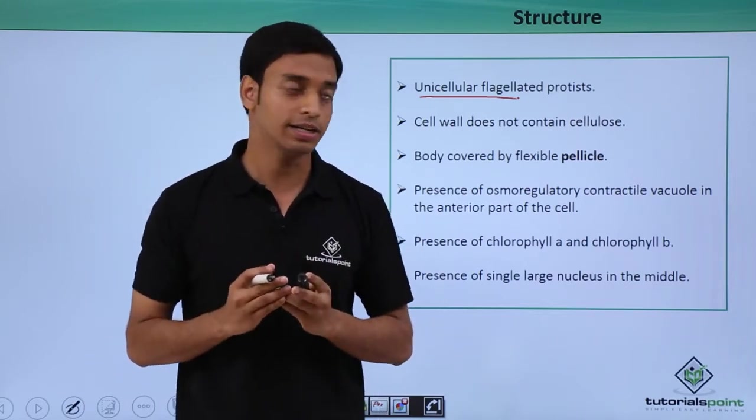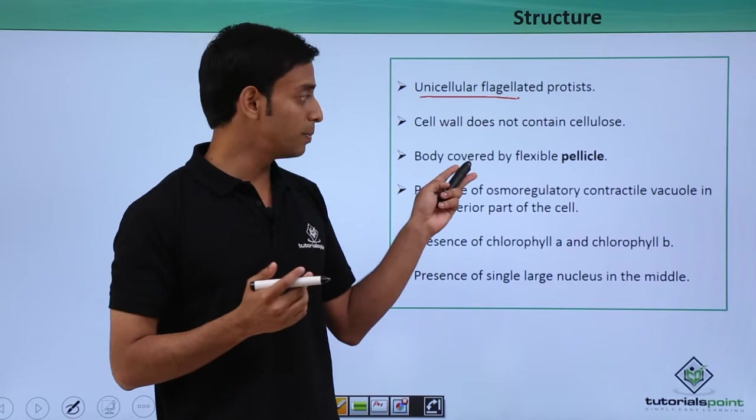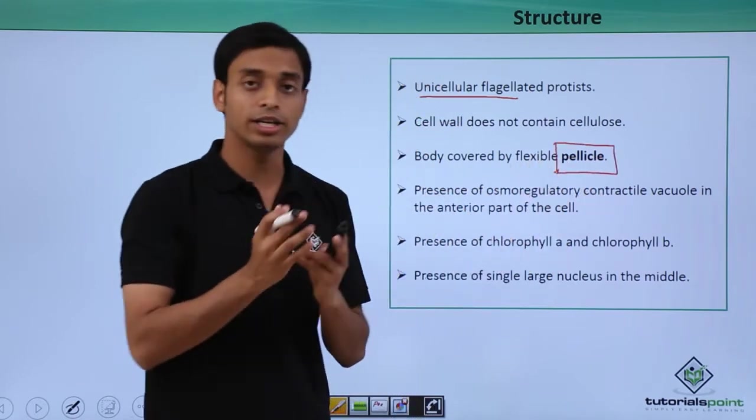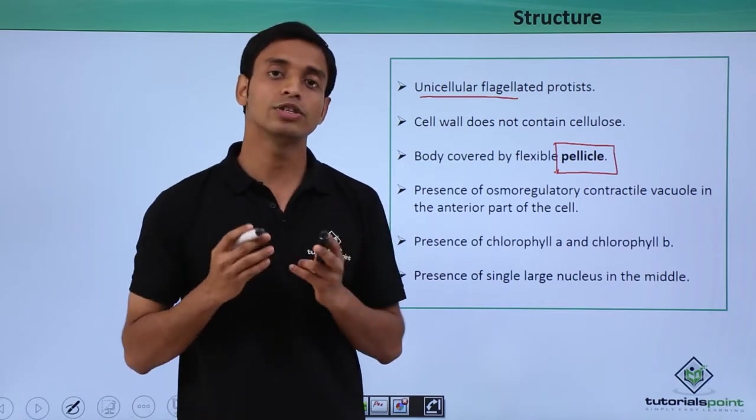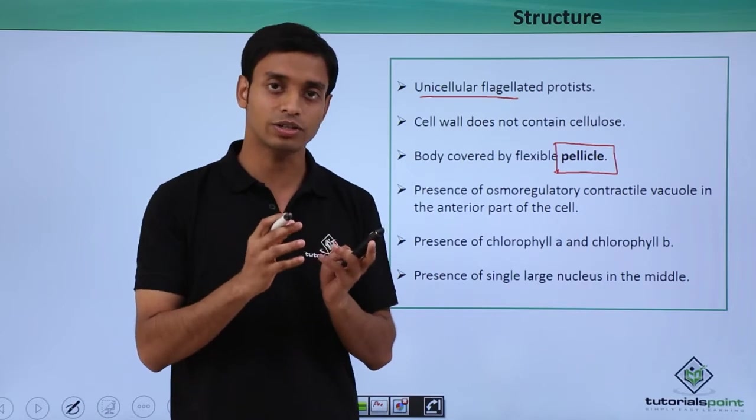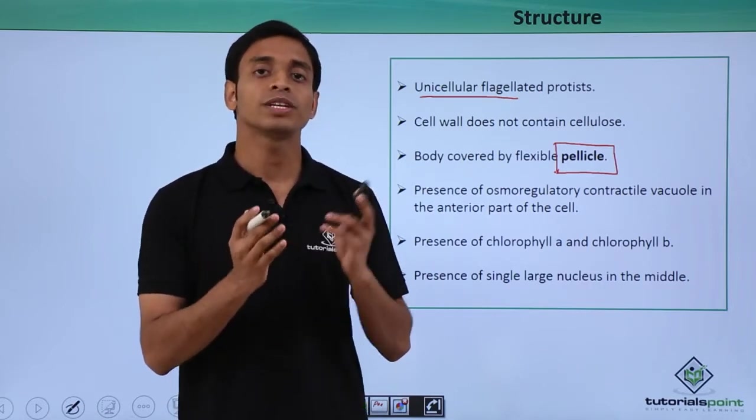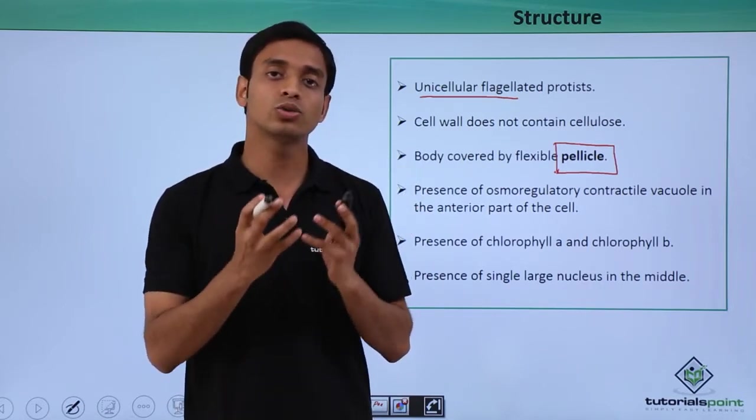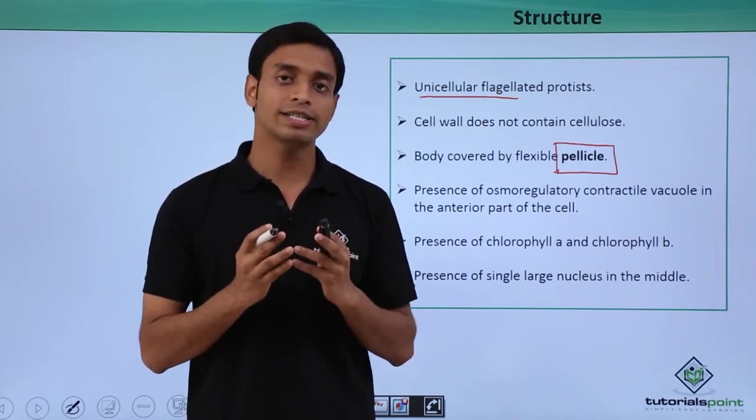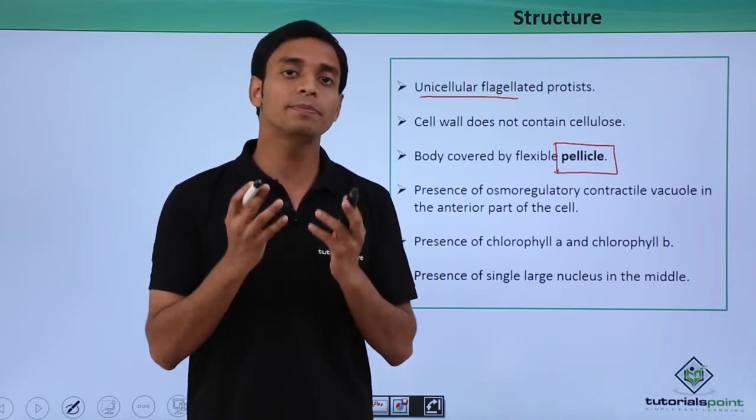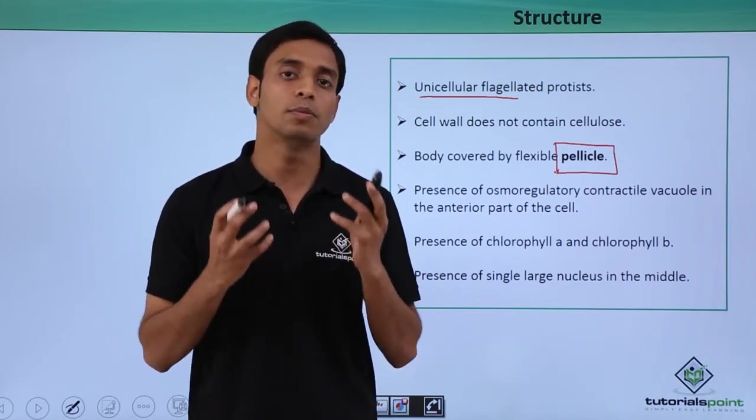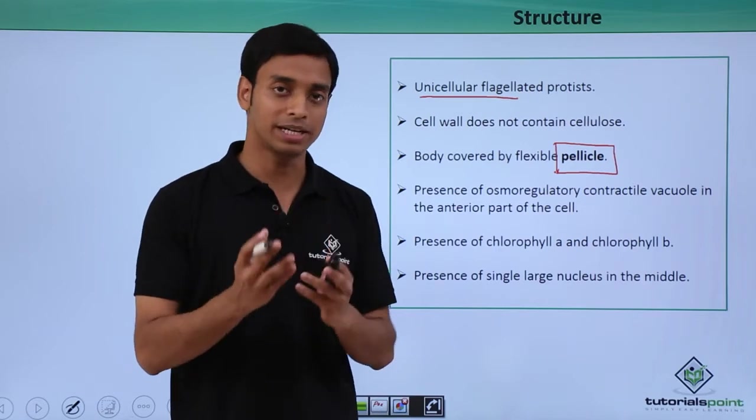The body is covered by flexible pellicle, which is an outer covering of the body in case of euglenoids. It is basically flexible in structure, and because of which it gives a flexible structure to the euglenoids also. Because of this, the euglenoids can perform the creeping type of movement like contraction and expansion of its body structure, which is known as metabody.